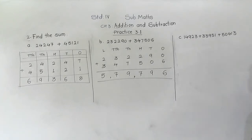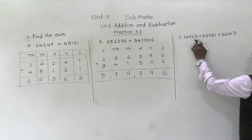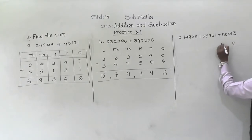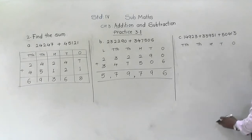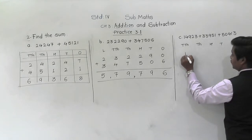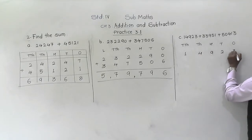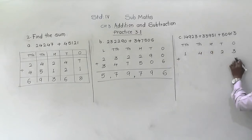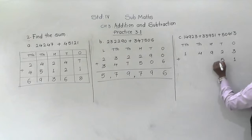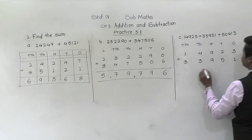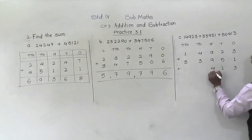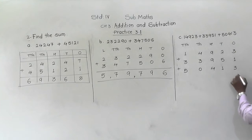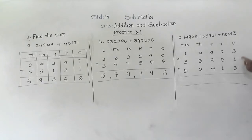Next is example c, where three numbers must be added. Place values go up to ten-thousands. Arrange all three numbers in columns. First number: 14,923. Write the second number starting from the ones place. Third number: 50,430. Now add them.